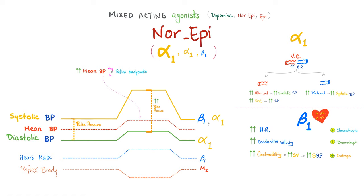Alpha 1 will squeeze your arteries. When you squeeze your arterioles, you increase afterload, which will increase your diastolic blood pressure. Norepinephrine has some beta 1, which will increase all of your cardiac properties — it is positive chronotropic, dromotropic, inotropic, and bathmotropic. It will increase your heart rate, conduction velocity, and contractility. When you increase heart rate and contractility, systolic blood pressure will increase. Also, alpha 1 will squeeze your veins, increasing preload, which will also increase systolic blood pressure.